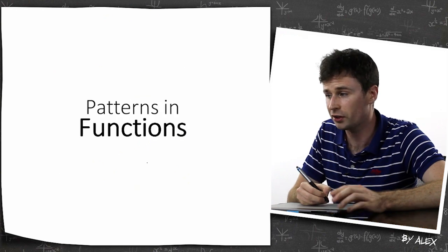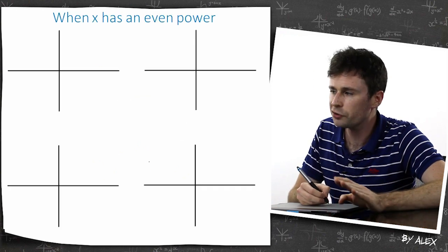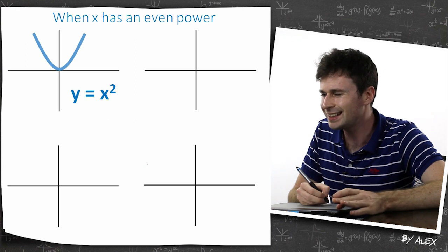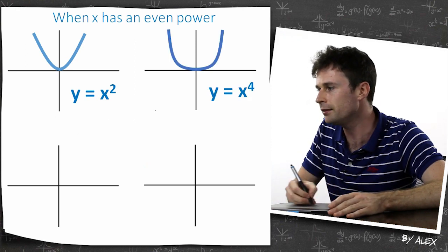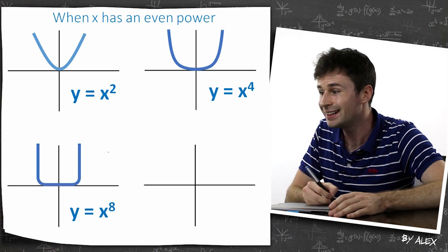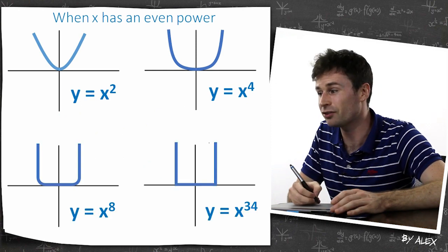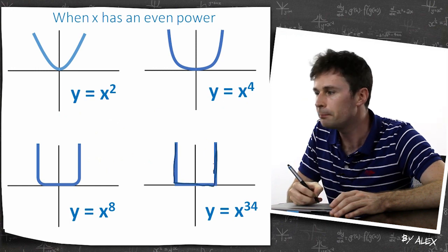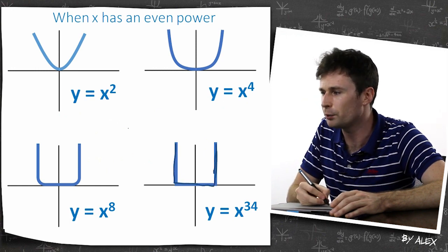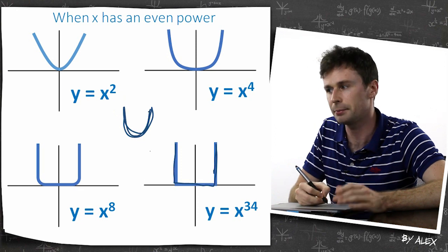So patterns and functions. Now you might notice these. When x has an even power, it tends to have this sort of shape. But as the power gets higher, so this is x squared, this is x to the power of 4, this is x to the power of 8, and this is x to the power of 34, you can see it just gets squarer and squarer. But if it's to an even power, we know it's always going to be this sort of shape.